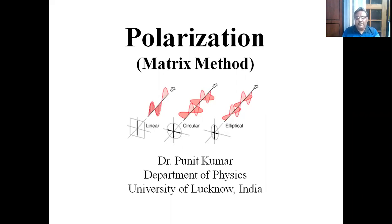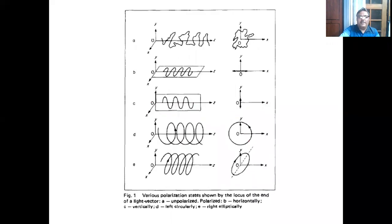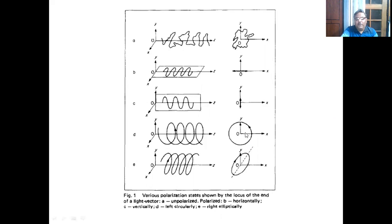Today we will be discussing polarization, and this talk will be about the matrix method we can use to explain the concepts of polarization. The polarization concept is based on the kinds of polarized lights we have. Random vibrations mean the light is unpolarized. Linearly polarized light has vibrations in a single plane — horizontal or vertical. If both electric and magnetic vector amplitudes are equal, they superimpose to form circularly polarized light.